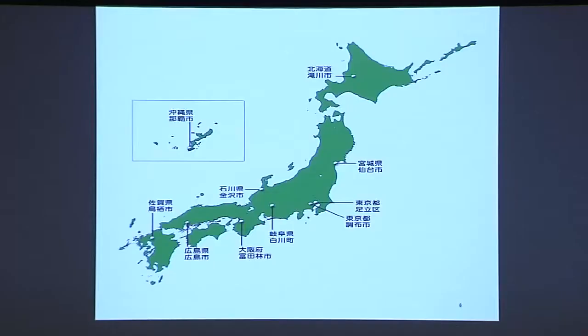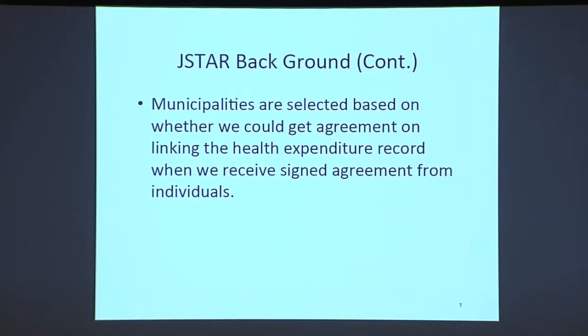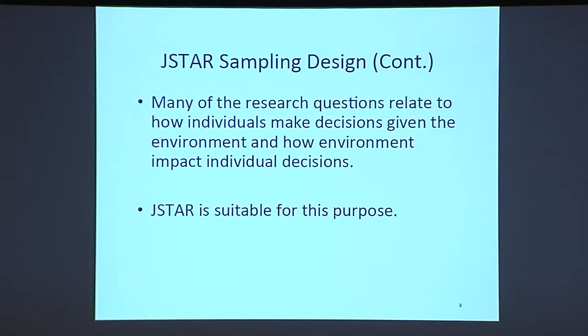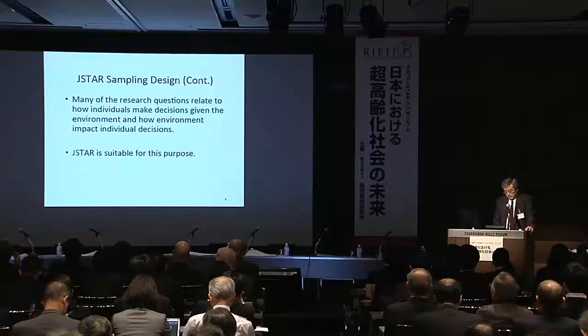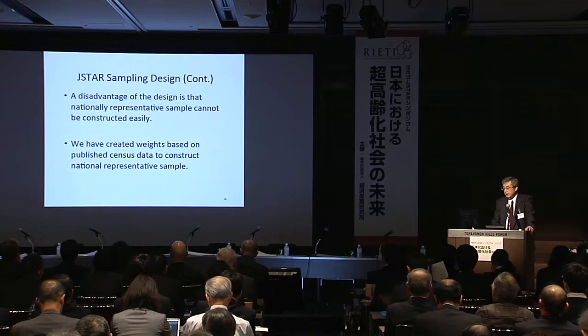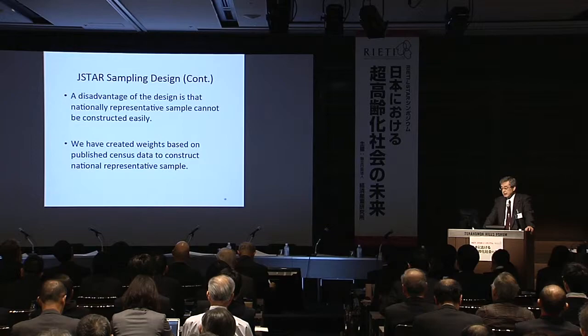Here is a map of the ten municipalities where we collect data. Municipalities are selected based on whether we could get agreement on linking the health expenditure record when we receive signed agreement from individuals. This sampling has the advantage of having many individuals who face a uniform socioeconomic environment, which can be identified without asking individuals directly. A disadvantage of the design is that a nationally representative sample cannot be constructed easily.